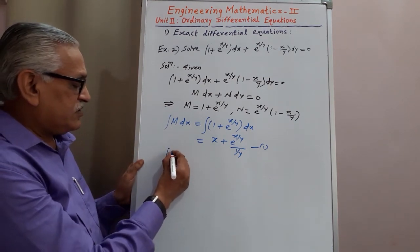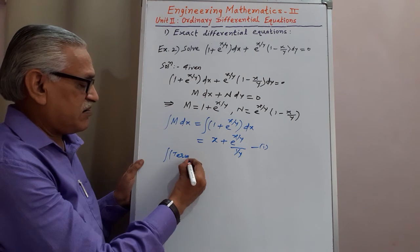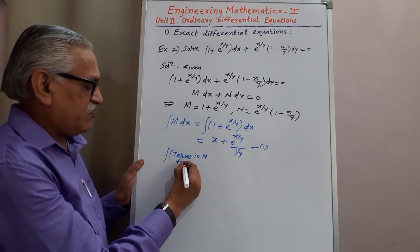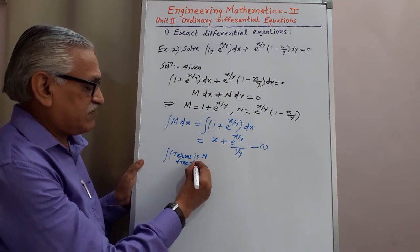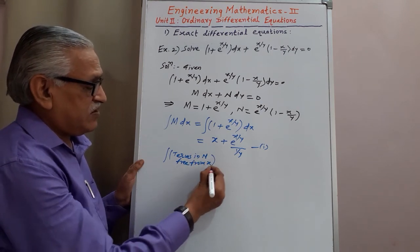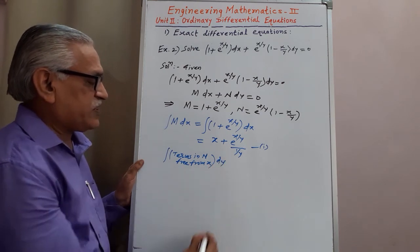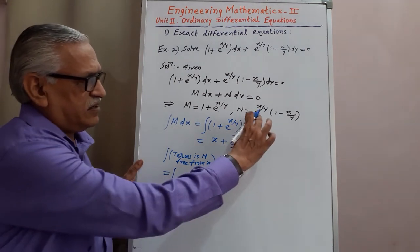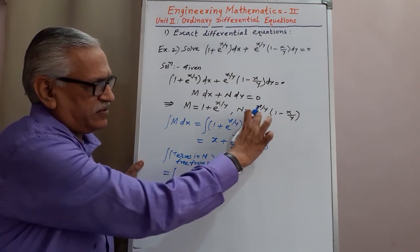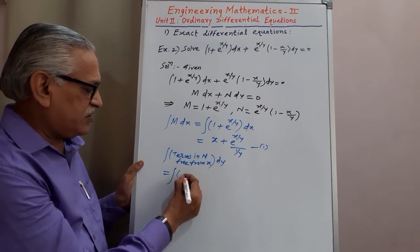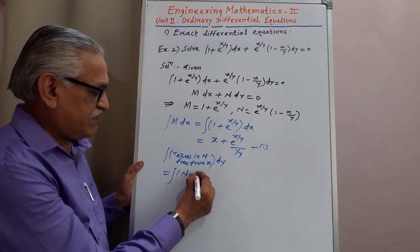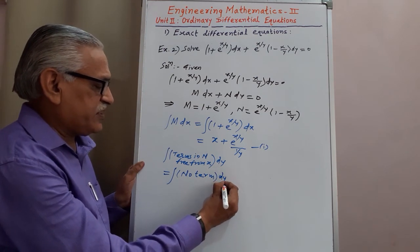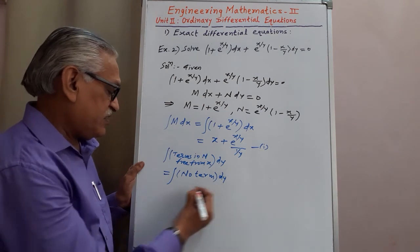In the second step, we look for terms in N which are free from x and integrate them with respect to y. The first term e^(x/y) contains x, and the second term x/y also contains x. Therefore, there is no term free from x, and its integration with respect to y is 0.